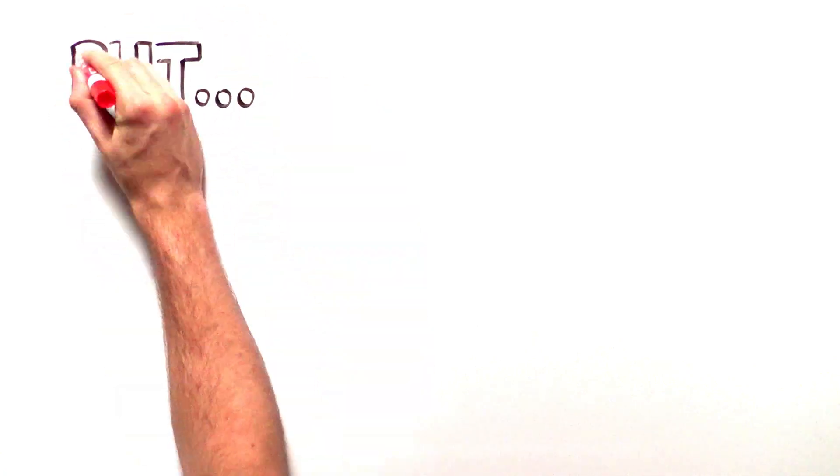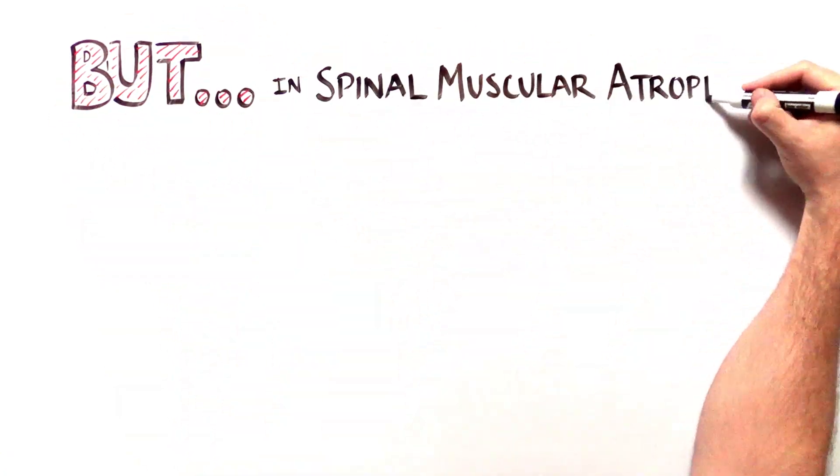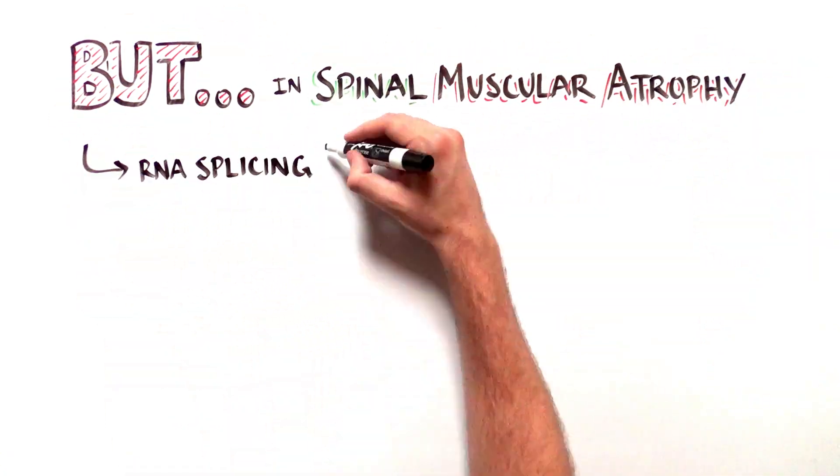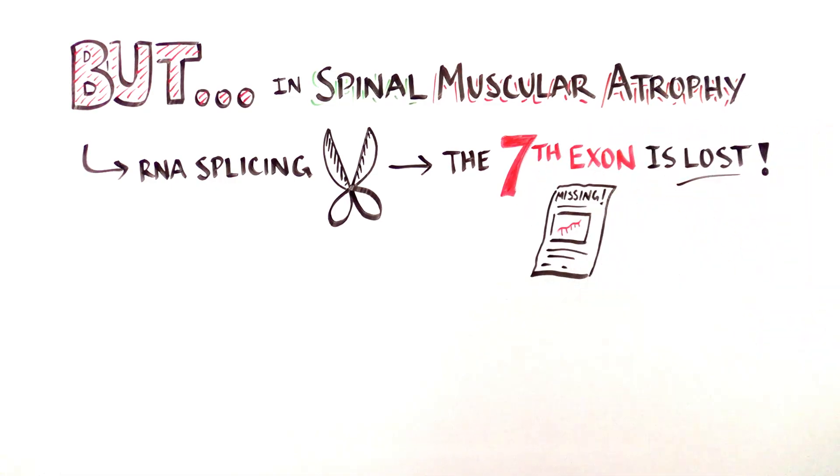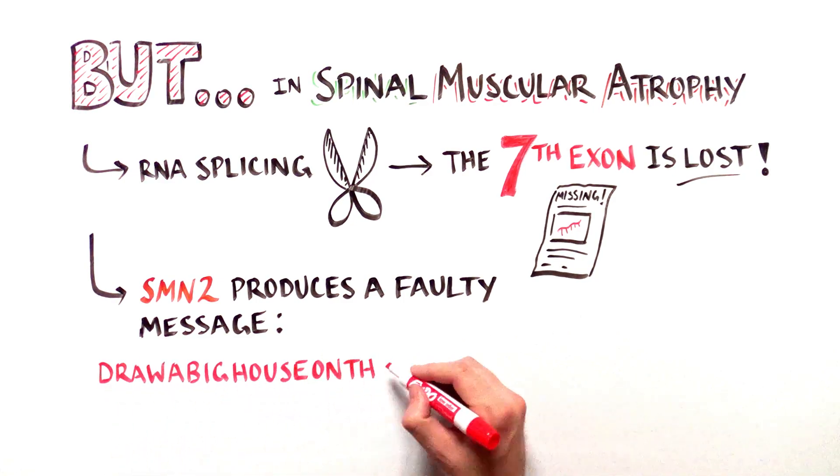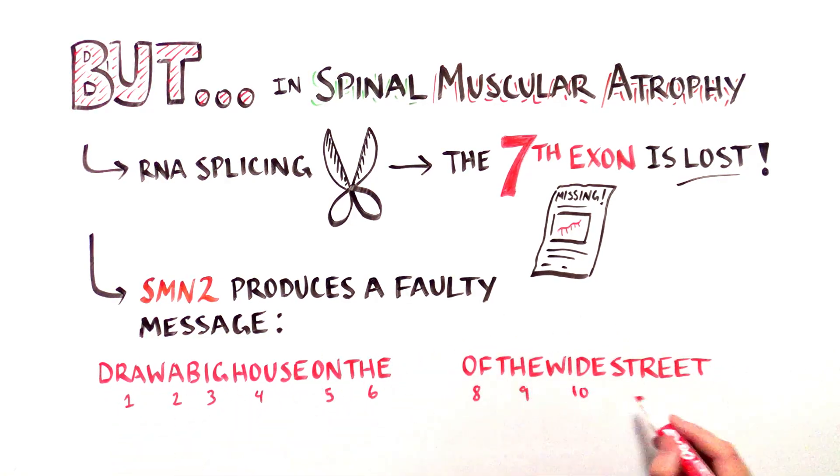In SMA, it turns out that during RNA splicing, the seventh exon of SMN2 is skipped by the machinery that edits RNA. Skipping of exon 7 generates a faulty message: draw a big house on the, of, the wide street.